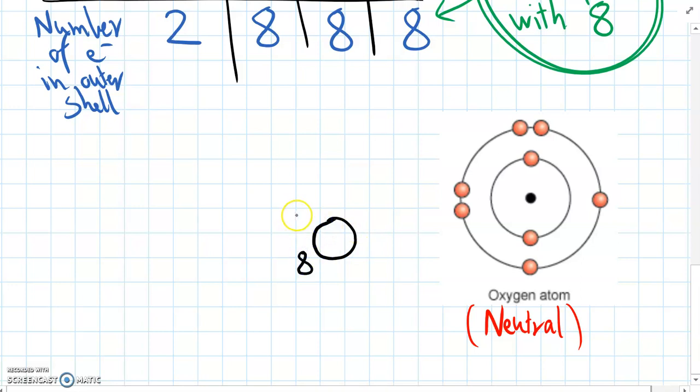And oxygen is number eight. It's got a mass of 16, and it has eight protons and eight electrons. So looking at the diagram, we can see it has a first shell that's full, and the second shell is holding six electrons at the moment.